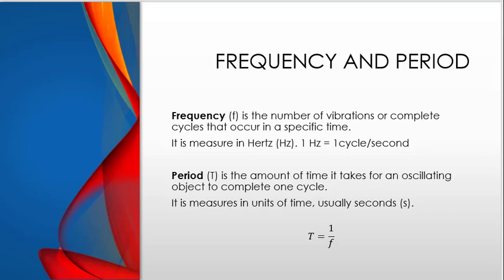Frequency is the number of vibrations or complete cycles that occur in a specific time. It's measured in hertz. You'll hear one cycle per second, because a hertz is one over a second. Period is the amount of time it takes for that object to complete one cycle. So these two things are related. They're actually inversely related, where period is one over the frequency.